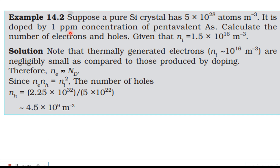From inside a testable semiconductors topic, like example 14.2. Suppose a pure silicon crystal has 5 into 10 power 28 atoms per meter cube. It is doped by 1 parts per million concentration of pentavalent arsenic. Calculate the number of electrons and holes, given that intrinsic charge density is equal to 1.5 into 10 power 16 per meter cube.